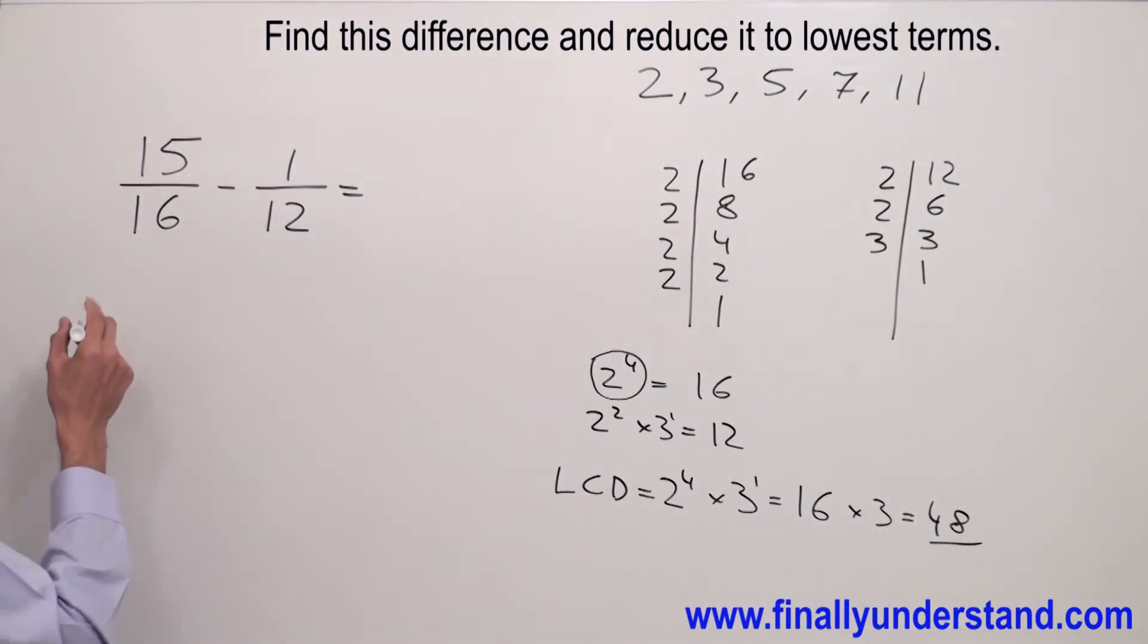Now, let me copy down these fractions one more time. 15 over 16, and the common denominator is 48. The question is, by what number I have to multiply 16 to get 48? I have to multiply by 3. Whatever I did in the denominator, I have to do also in the numerator. 15 times 3 gives me 45.